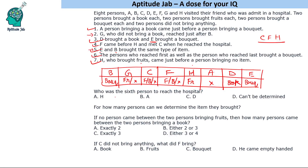Question one: who was the sixth person to reach the hospital? The sixth person is A. Question two: for how many persons can we determine the item they brought? Counting: B, E, D, H, A — that is five persons. Some may think four, but we can also determine for A, since we know A did not bring anything. So the answer is five.